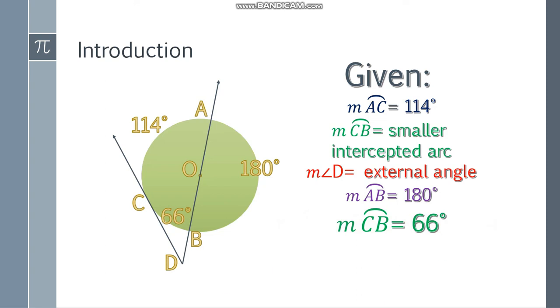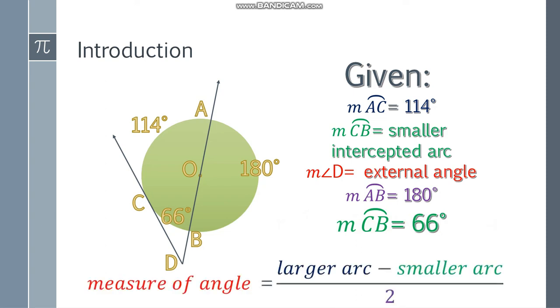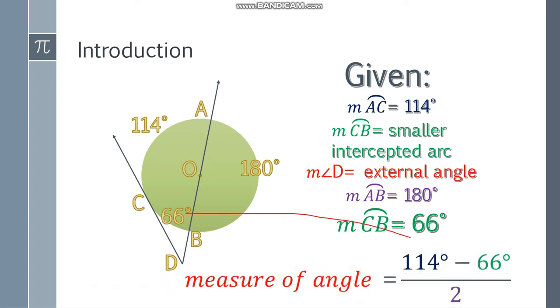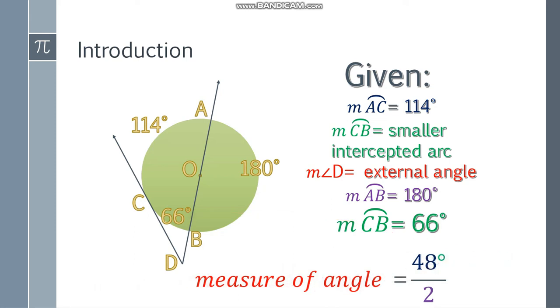Now let's use the formula on how to find the external angle: larger arc minus smaller arc divided by 2. So you will have 114 degrees here and the smaller arc, that will be 66 degrees. So 114 minus 66 is equal to 48 and 48 divided by 2, that will be 24 degrees.